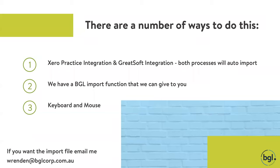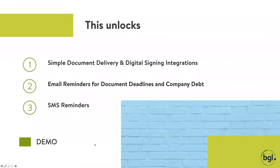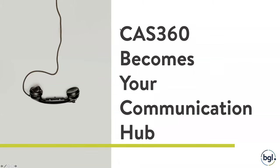I have put my email address at the bottom. If you don't have many email addresses or mobile phone numbers in your current CAS360, send me an email and I can send you your full contact list to start putting in those details. The third option — you've always got a keyboard and mouse and can always enter the email address and phone numbers manually. If you've got a small client base, maybe that's the best way to go about it.